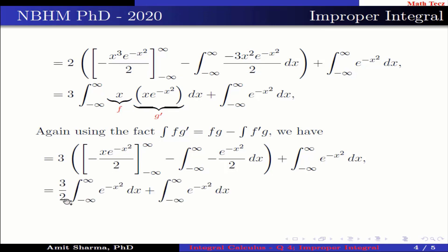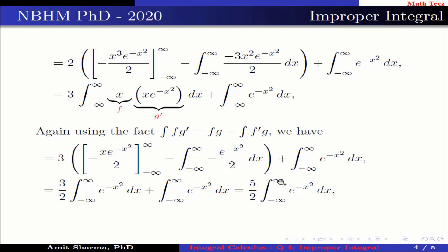So we have (3/2)·∫_{−∞}^{∞} e^(−x²) dx plus ∫_{−∞}^{∞} e^(−x²) dx, which can be further simplified as (5/2)·∫_{−∞}^{∞} e^(−x²) dx.